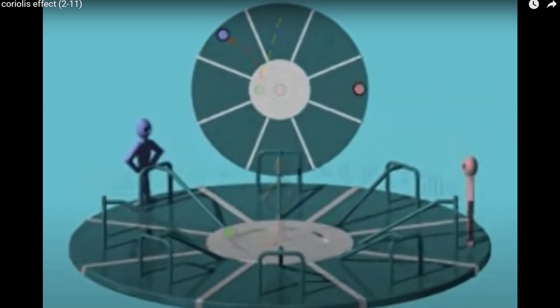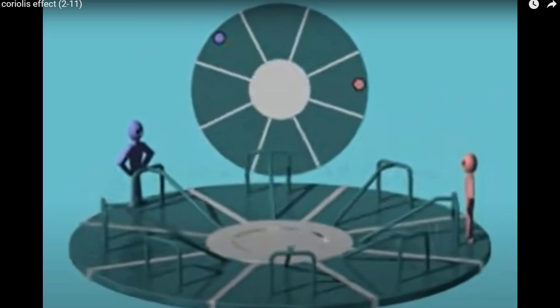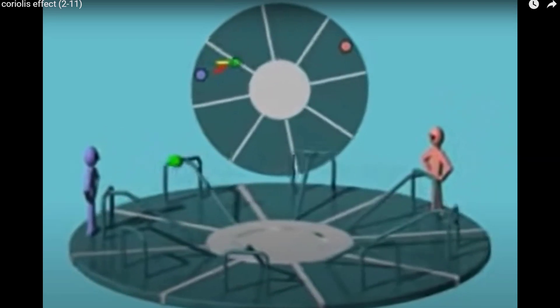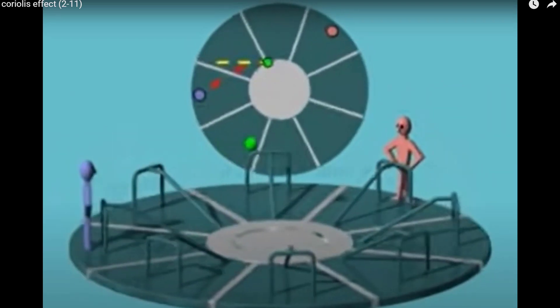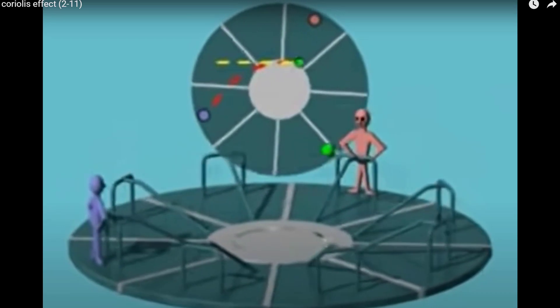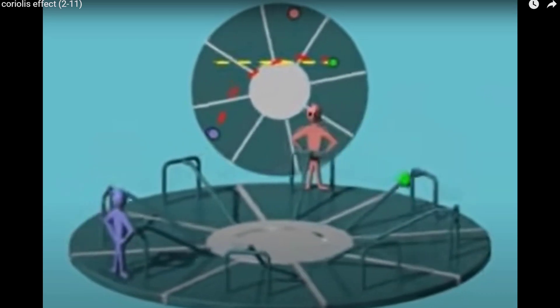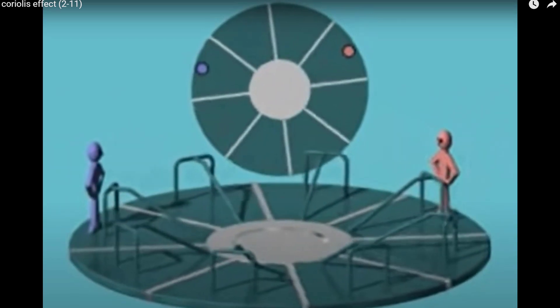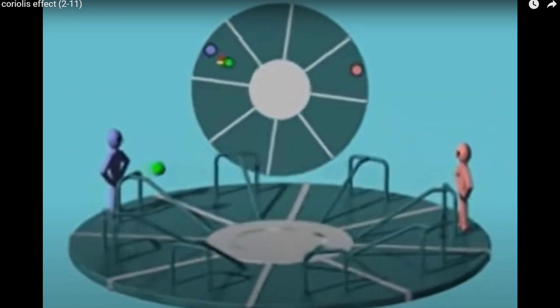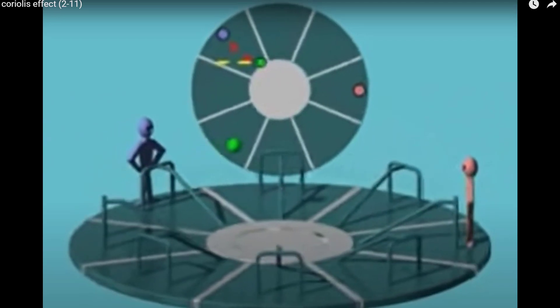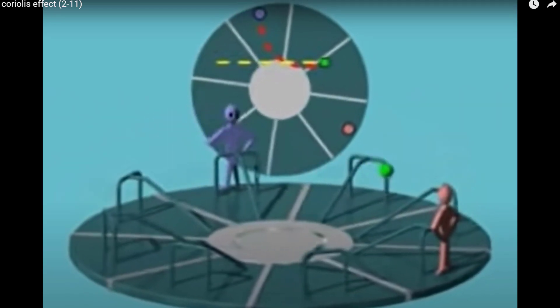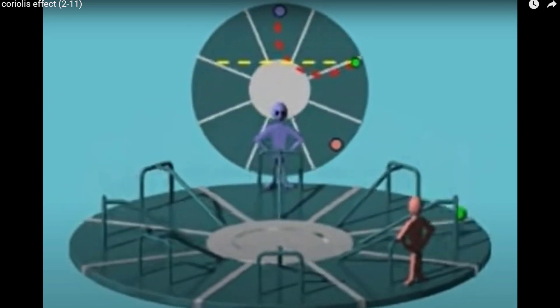Let's look at a throw across the merry-go-round. Both people move with the merry-go-round. The ball is thrown. Although it flies straight, it appears to be deflected from its original path. Apparent deflection increases as the ball travels farther. In the southern hemisphere, rotation is clockwise when viewed from over the pole. Again, the ball follows a straight course, but its apparent flight path is diverted. This time,